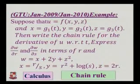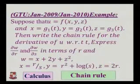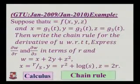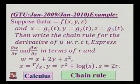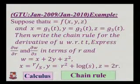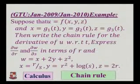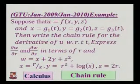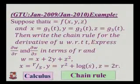Let us see an example from our GTU paper for the chain rule — GTU January 2009 and January 2010. Suppose u equals f of x, y, z, where x equals g1 of t, y equals g2 of t, and z equals g3 of t. Then write the chain rule for the derivative of u with respect to t.